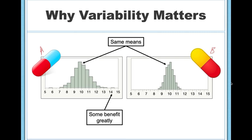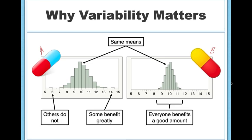On the left, some people benefited very greatly, whereas others really didn't benefit at all. But on the right, everyone benefits a good amount. In this case, I would personally pick medication B because it's more consistent. And so this is an example of why knowing the variability might help us to make some real-life decisions.